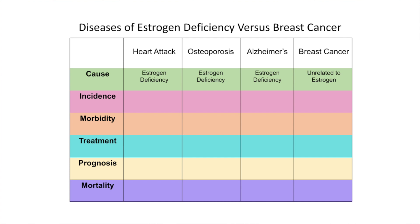The question for each woman is whether or not that's a good trade-off. So for the cause row in our chart, we're going to designate estrogen's role in causing each of these four diseases. Heart attack, osteoporosis, and Alzheimer's are caused by estrogen deficiency. Breast cancer is not. You see estrogen deficiency designated as the cause for the three big diseases, but estrogen is unrelated to breast cancer with regard to cause.